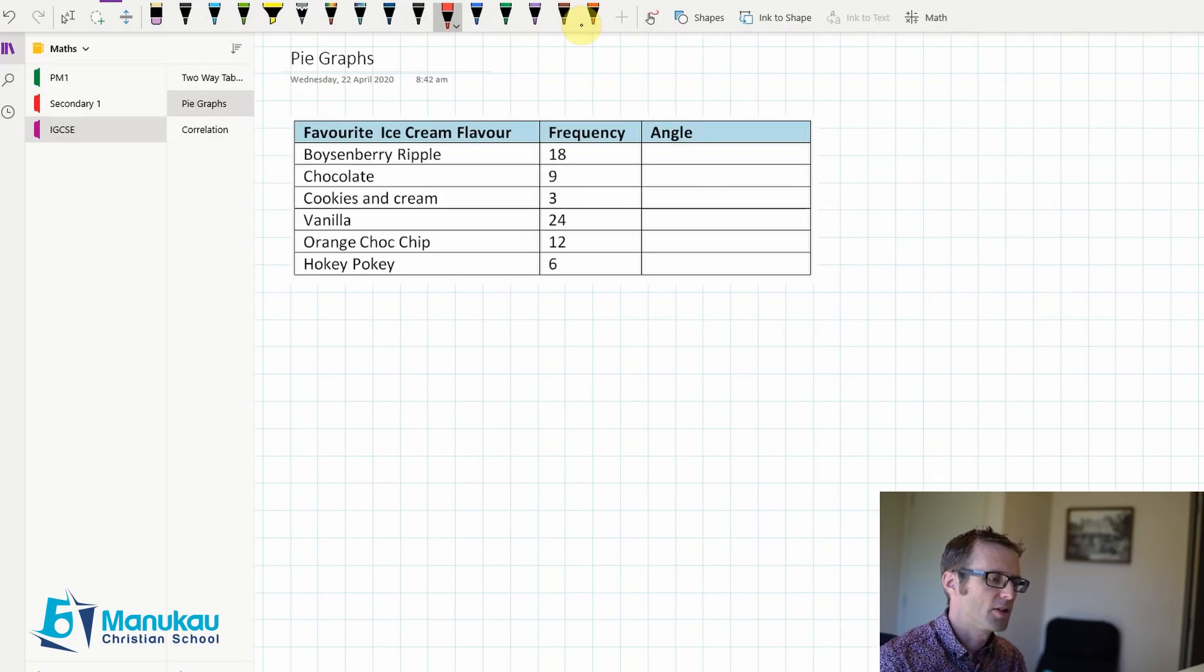We've been given a table, and you can see on this table we've got some different ice cream flavors that people like, and the frequency of people who pick that as their favorite ice cream flavor, and we've got to work out the angle that it would be in a pie graph. Your first step in these kinds of questions is to figure out the total number of people who are involved here.